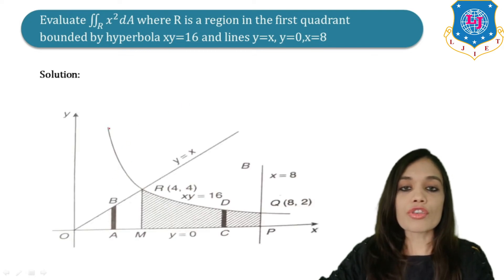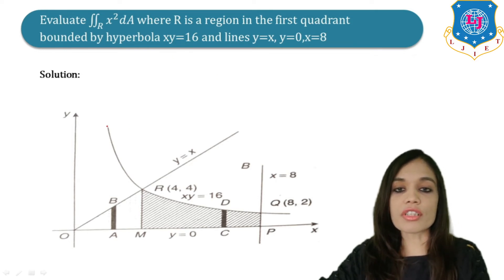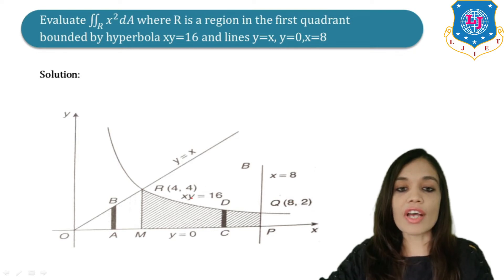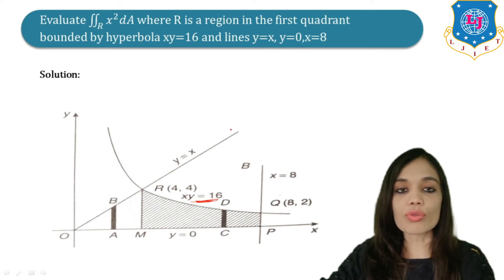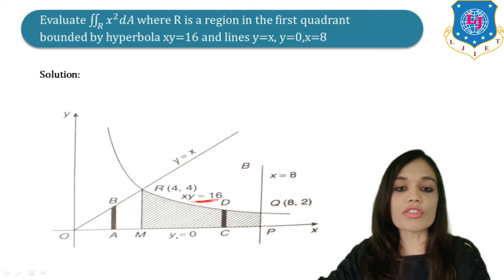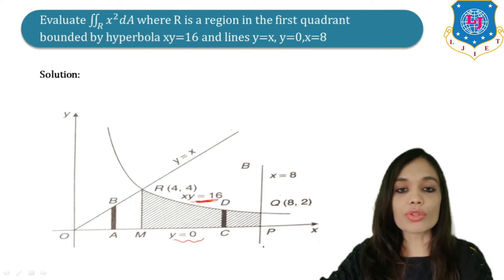To find the limits, we have to draw the graph of all three curves. First, this is the hyperbola xy = 16 in the first quadrant. Next, draw the line y = x. Then draw y = 0, which is the x-axis. And lastly, draw the line x = 8.